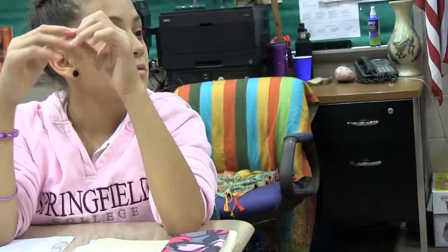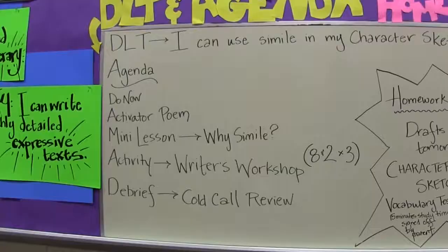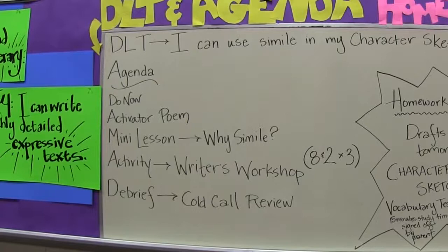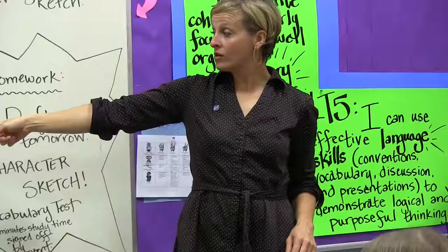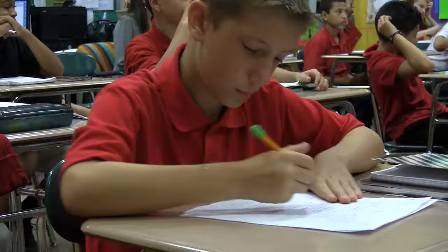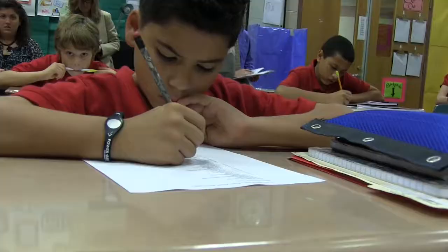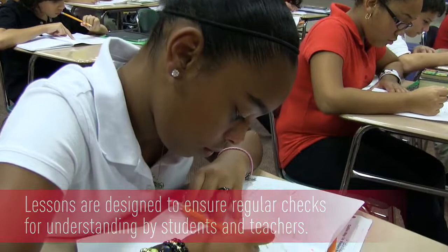We do an agenda walk so that the kids know what's coming. The activator poem is our next step, then a mini lesson, and then we'll have a workshop model — eight minutes of work time, two minutes on, run through that three times. Students know from the get-go that work time is broken into small segments, they're responsible for setting a goal at the beginning of each, and that builds their capacity to self-assess.